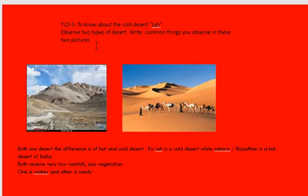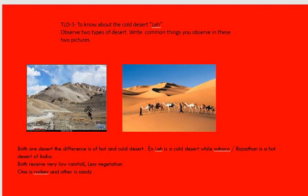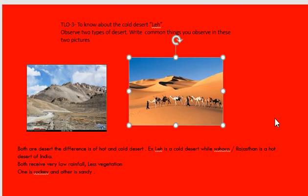The third TLO of our chapter is to know about the cold desert, that is Leh. Observe these two pictures — both are deserts. You are generally familiar with the hot desert, which has a lot of sand and where the camel is the main animal, known as the ship of the desert. But children, there are two kinds of deserts: the cold desert and the hot desert. Both have very low rainfall and less vegetation. The difference is that the cold desert is rocky while the hot desert is sandy.